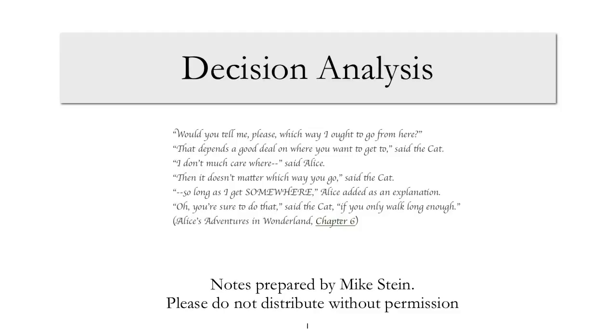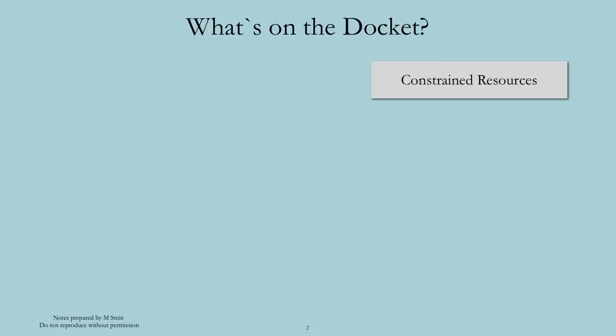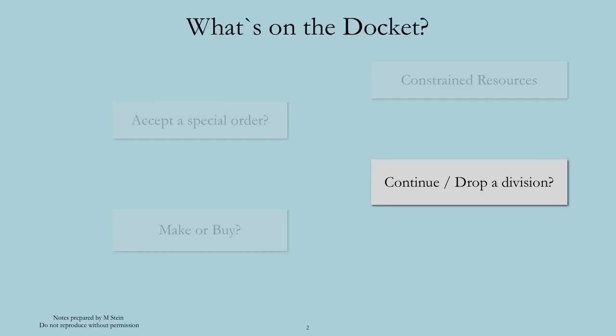We'll now have a couple of screencasts that look at decision analysis. We'll start by looking at how to incorporate constrained resources into decision making. We'll include examples of whether or not to accept a special order, whether to make or buy a part, whether to continue or drop a division.